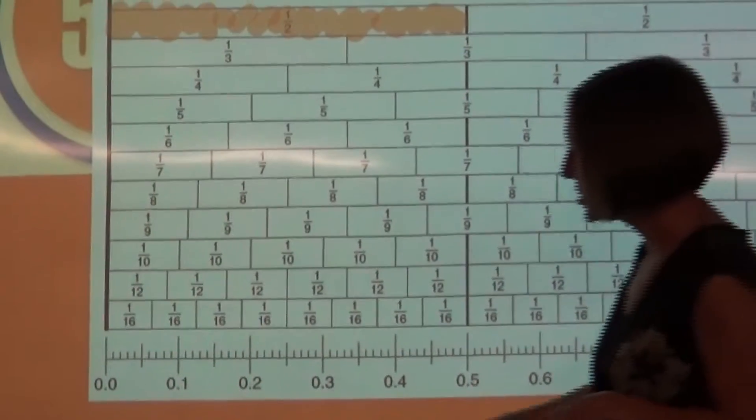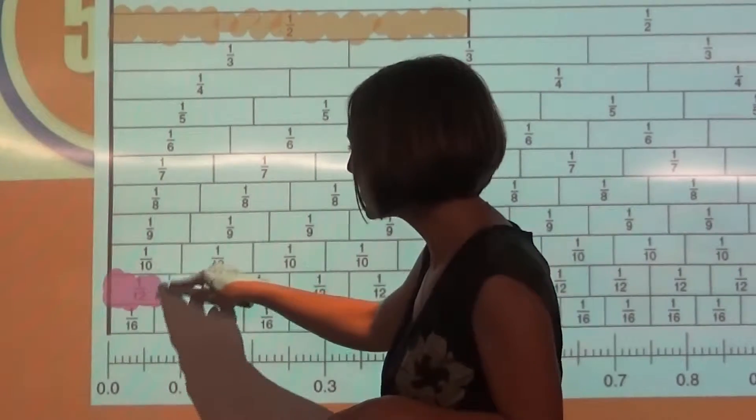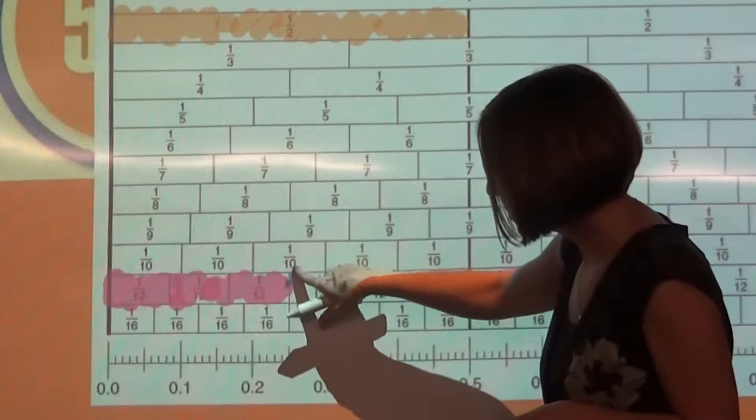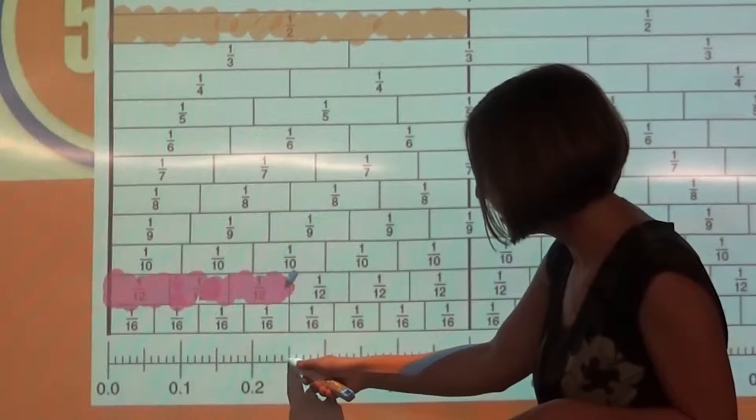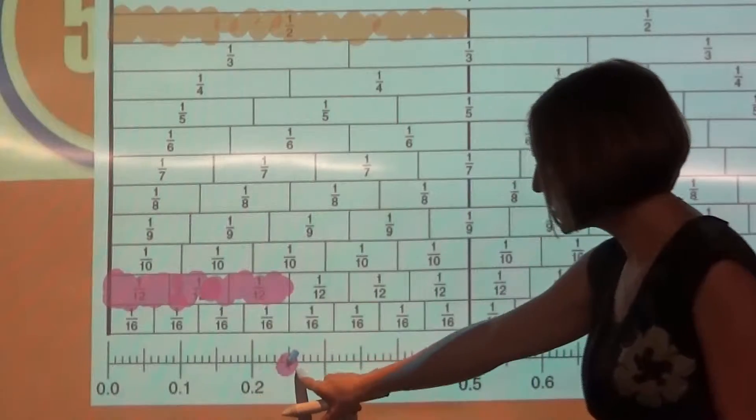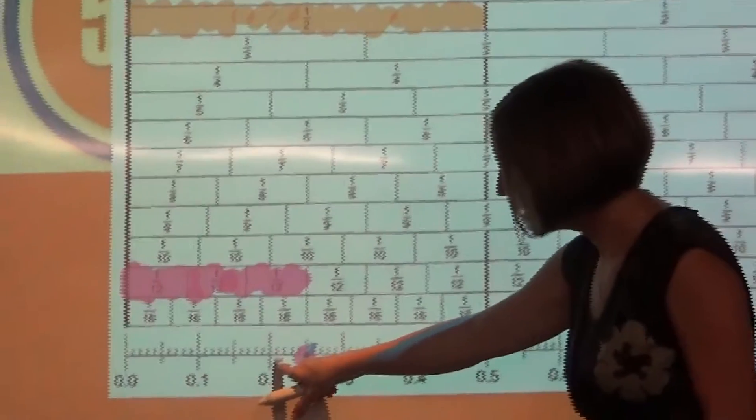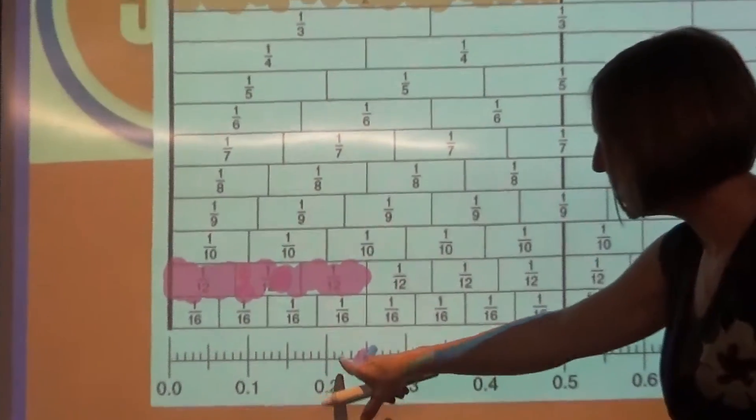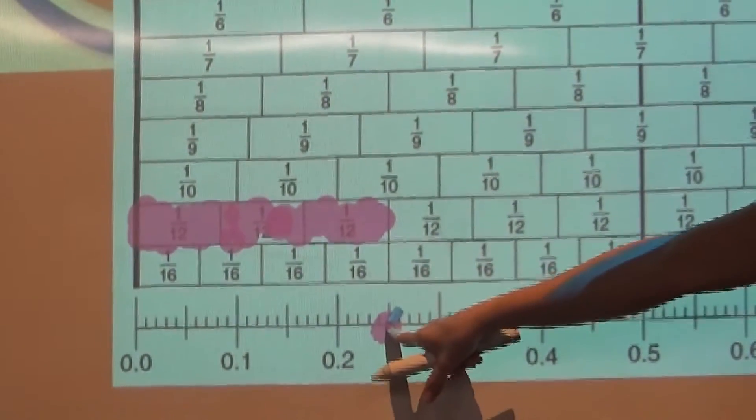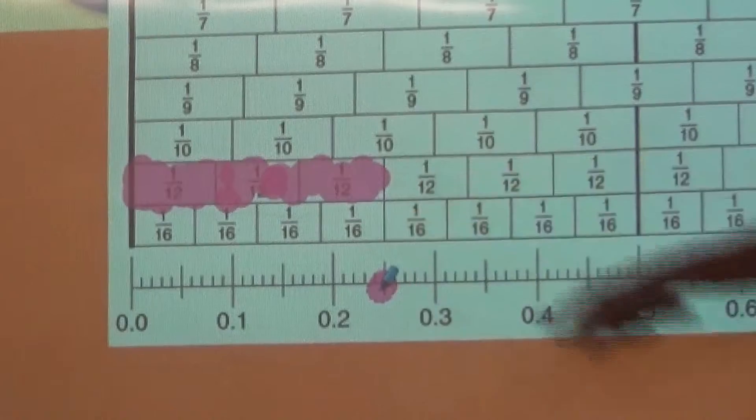If we were to do 3 twelfths, so 1 twelfth, 2 twelfths, 3 twelfths, and we were to follow that line down, it lands here on our number line. If this is 2 tenths and each of these marks is worth 1 hundredth, we would have 21 hundredths, 22 hundredths, 23 hundredths, 24 hundredths, 25 hundredths is equal to 3 twelfths.